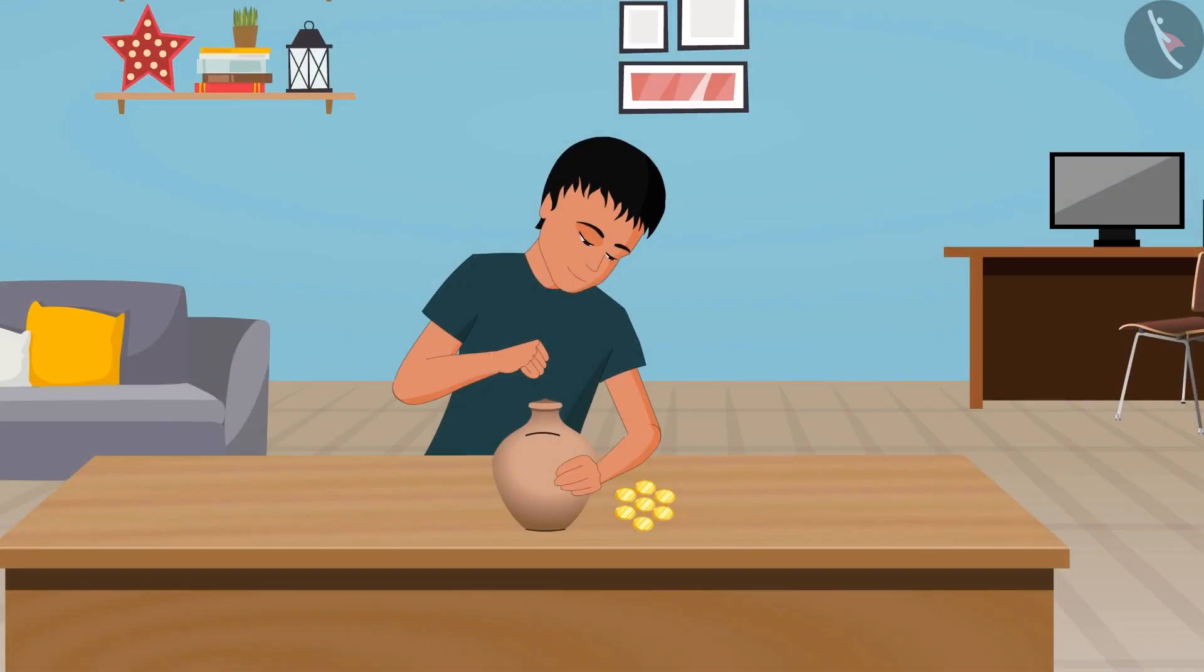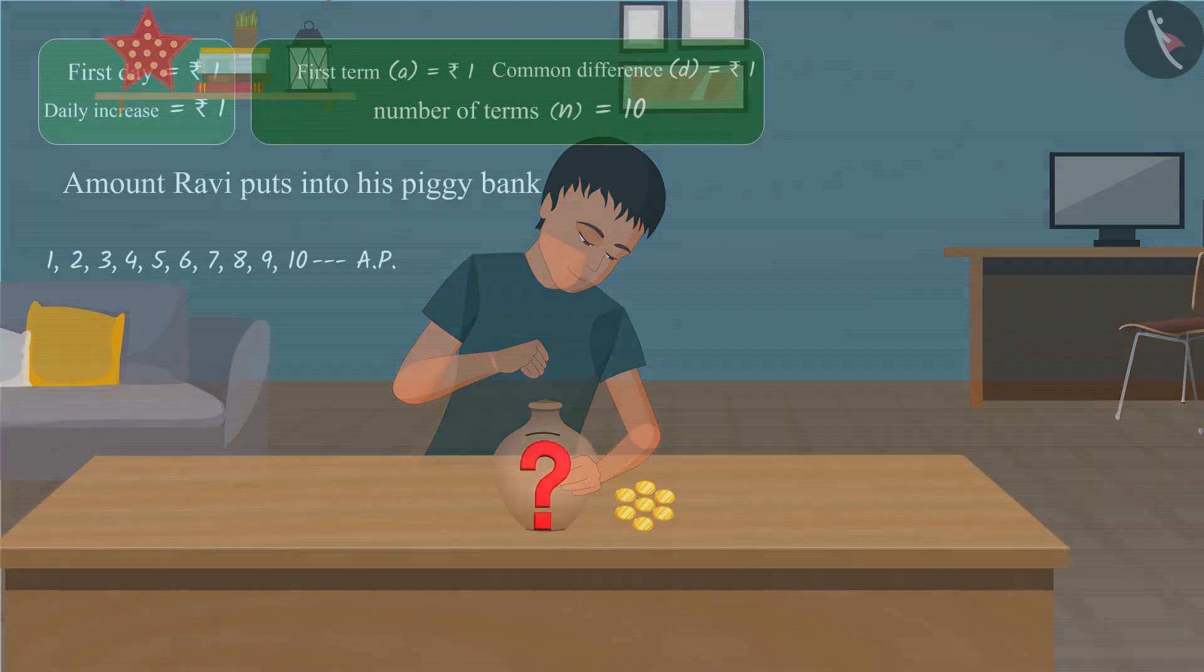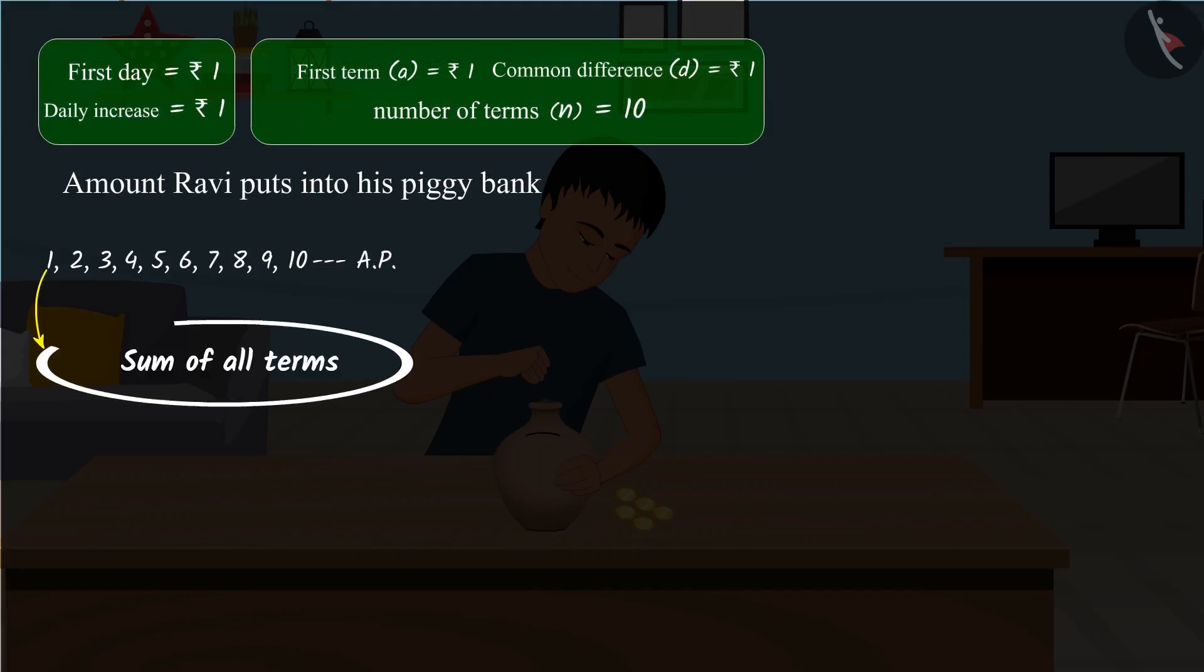Now we have to find out how much money Ravi puts into the piggy bank in 10 days, for which we have to calculate the sum of all the terms of this arithmetic progression.